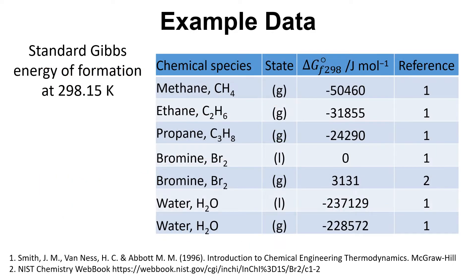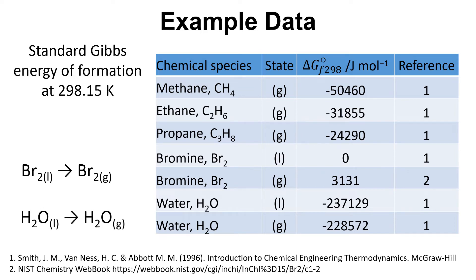Here's some example data: different chemical species with their state and values for the standard Gibbs energy of formation, all at 298.15 Kelvin. Bromine liquid has a value of zero because it's already in its standard state as an element, but bromine gas has a non-zero value since the gas is not the standard state. Similarly for water — the standard state is liquid, but the gas phase gives a slightly different non-zero value to account for it no longer being in the standard state.